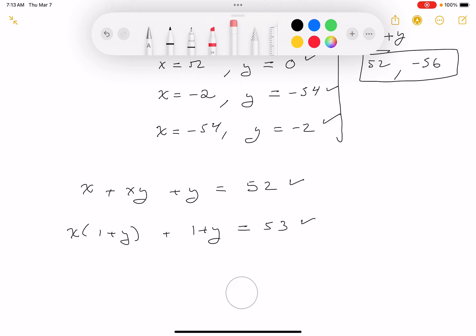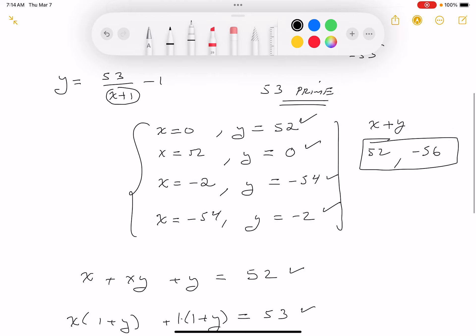I'm going to factor this now. What do you get? (1 plus y) times (x plus 1) equals 53. Again, I'm really at the same story. The story is the product of these two numbers must be 53. These must be integers. We're going to get the same results—same ones. So the answers are going to be 52 and minus 56. And we're done. Thank you.